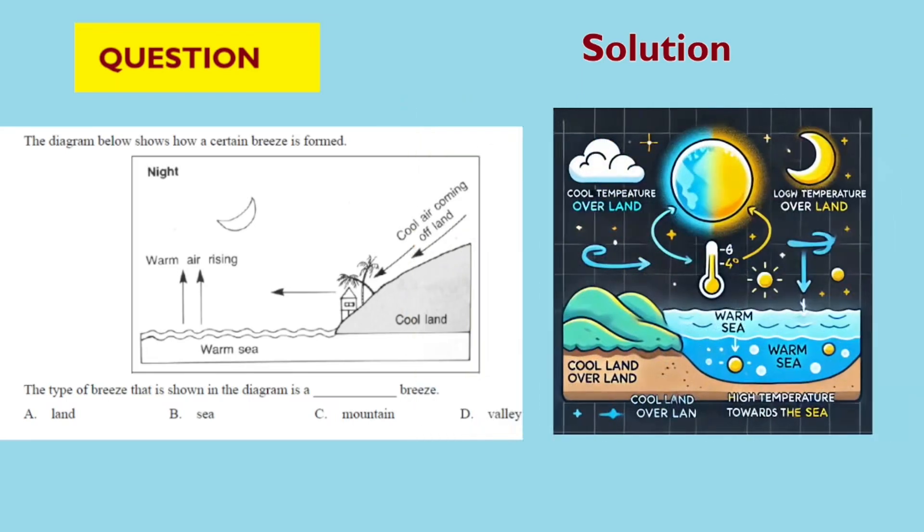Second, identify temperature differences. The land is labeled as cool land, while the sea is labeled as warm sea. This indicates that at night, land cools down faster than water.